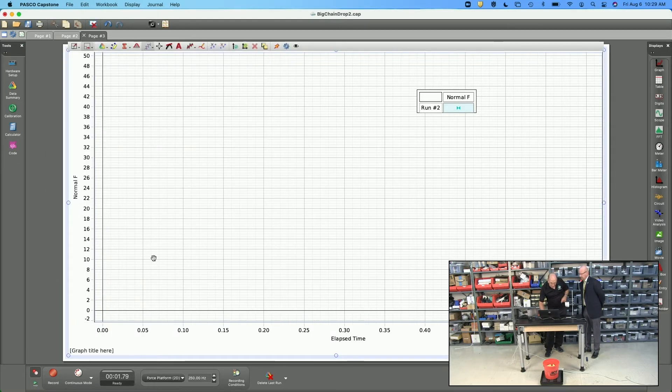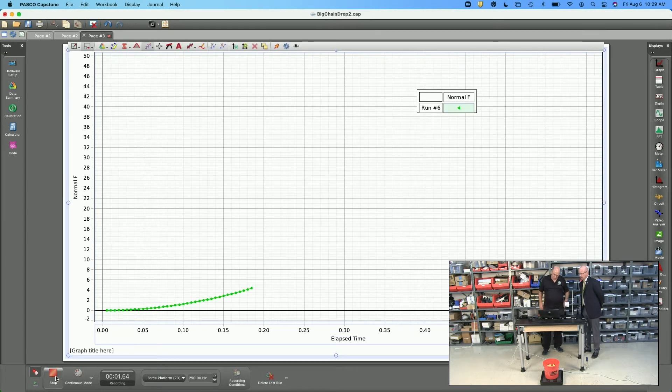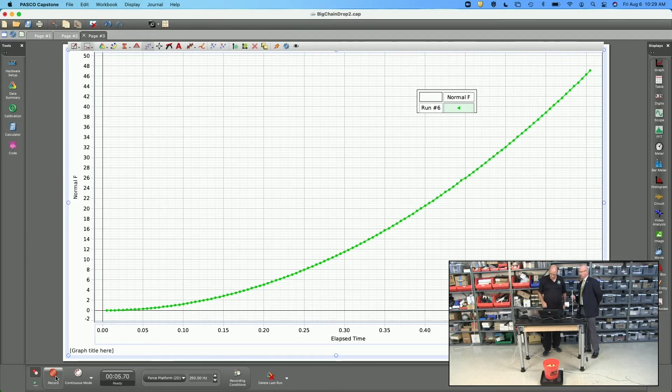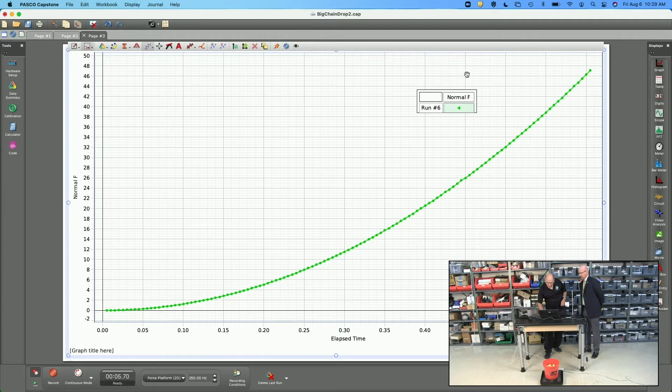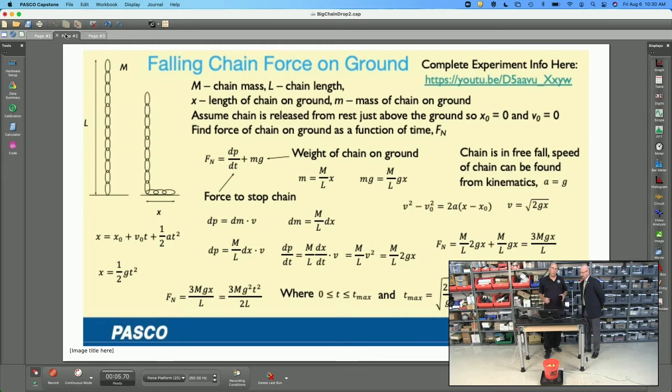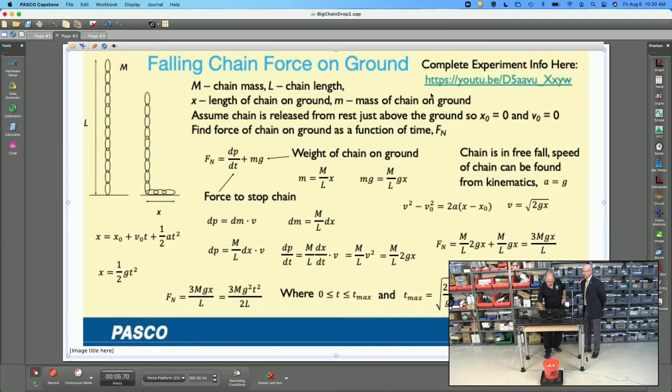This is really neat - you're using the Blockly coding that's built into the software. You've now made a model, a predictive model using the code, and then we could test that predictive model. You can see that the maximum force here is about 47 newtons, so this is predicting the same thing that calculus did. That simple code replaced all that stuff. I think students understand the calculus better if they also see this finite time step approach and get more understanding of what it means to take an infinitesimal amount of time.